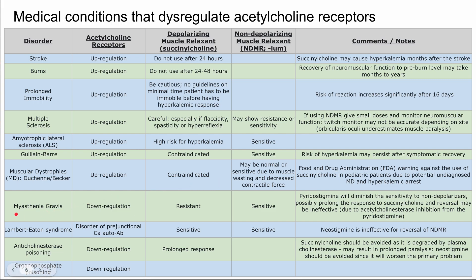Myasthenia gravis involves downregulation of acetylcholine receptors, so patients will be resistant to succinylcholine and sensitive to non-depolarizing muscle relaxants. Pyridostigmine, commonly used to treat myasthenia gravis, diminishes sensitivity to the non-depolarizing agents and may prolong the response to succinylcholine. Reversal may also be ineffective since acetylcholinesterase inhibition is already occurring from pyridostigmine.